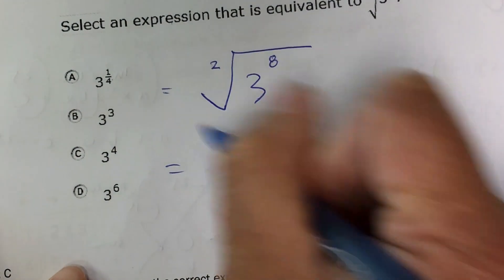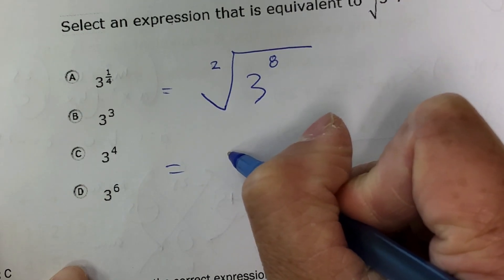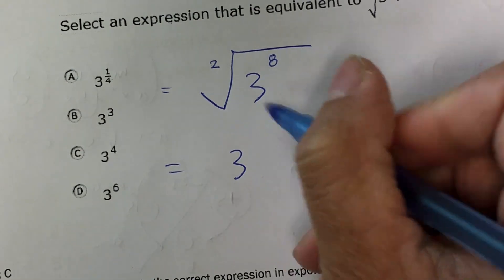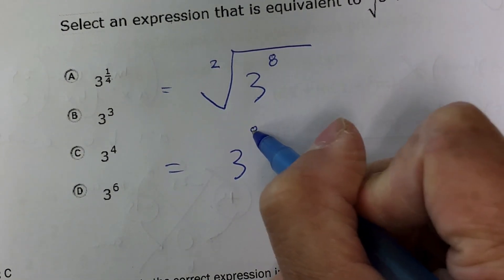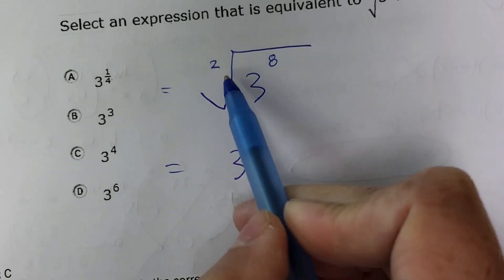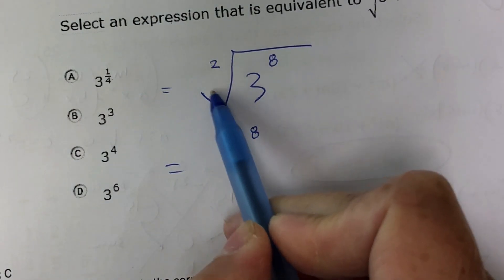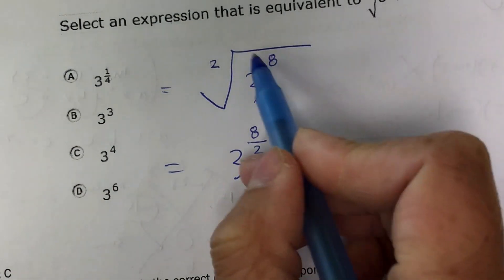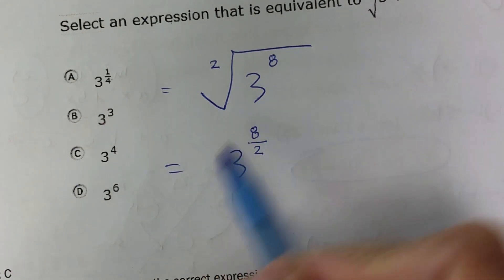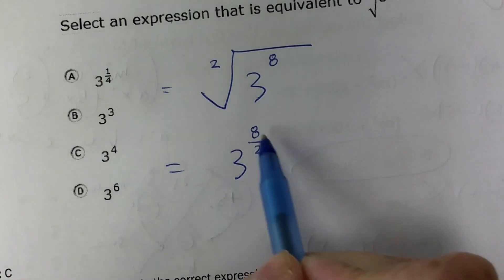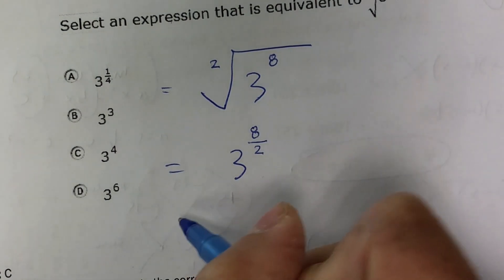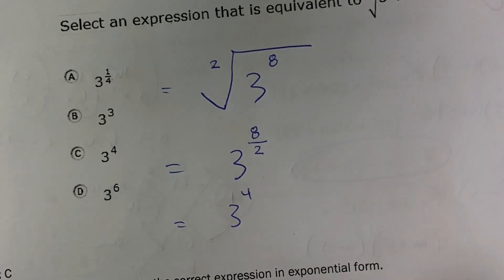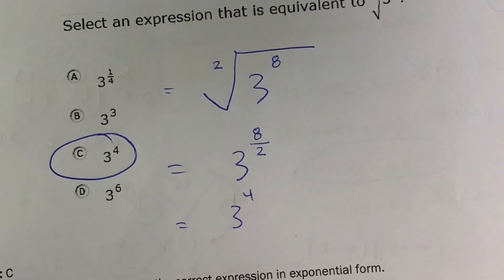So this expression now is equivalent to, the 8 is going to go in the numerator, and the 2, or this index, what it's called, goes in the denominator. So now we have this radical expression, which is equivalent to a fractional exponent, and then 8 divided by 2 is 4. So 3 to the 4th power is the correct answer, it is C.